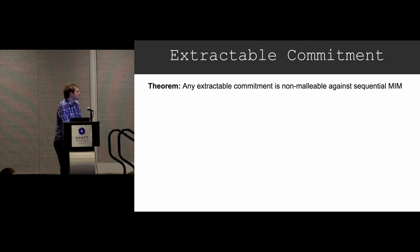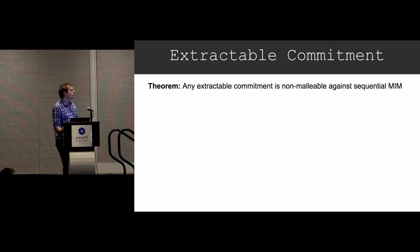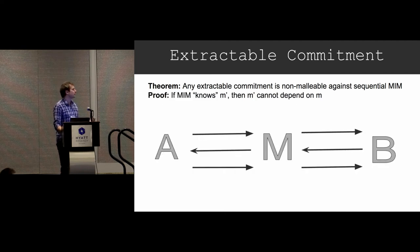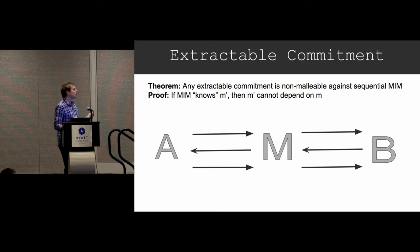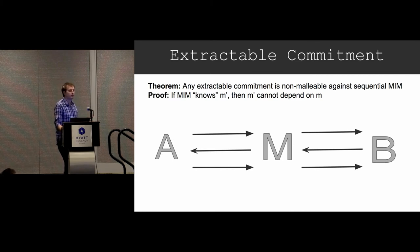The theorem — a very easy theorem — is that any extractable commitment is automatically non-malleable against the sequential man-in-the-middle. The intuition is that extraction corresponds to knowledge: if you can extract M prime from the man-in-the-middle, then the man-in-the-middle knows M prime, and therefore M prime can't depend on M, because that would break hiding — M is computationally hidden from the man-in-the-middle.